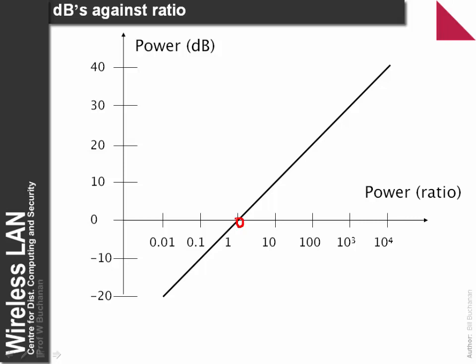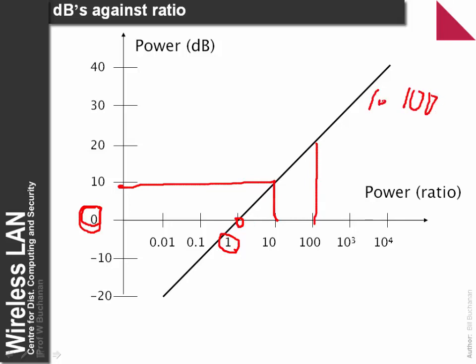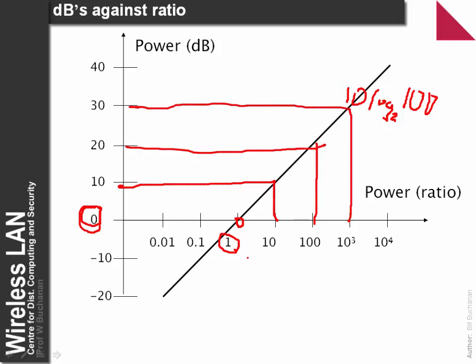We can plot this as a logarithmic, log-linear graph. A power ratio of 1 gives 0 dB. A ratio of 10 gives 10 dB, a ratio of 100 gives 20 dB, and 1000 gives 30 dB. In the other direction, 0.1 gives minus 10 dB, and 0.01 gives minus 20 dB.